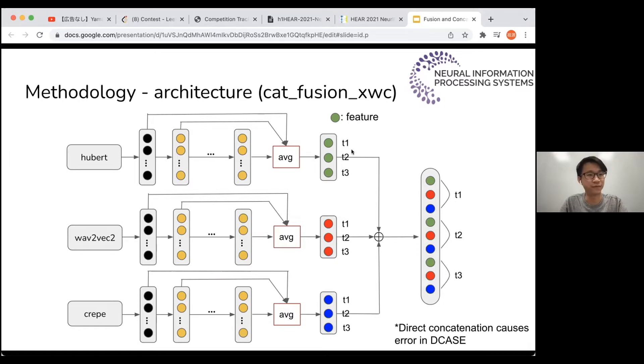So we turn to another method, which is more like the process of time-align. This is the T1 timestamp in Hubert, this is the T1 timestamp in Wave2Vec, and this is the timestamp in CREPE. So this is the whole information for the first timestamp, T1.